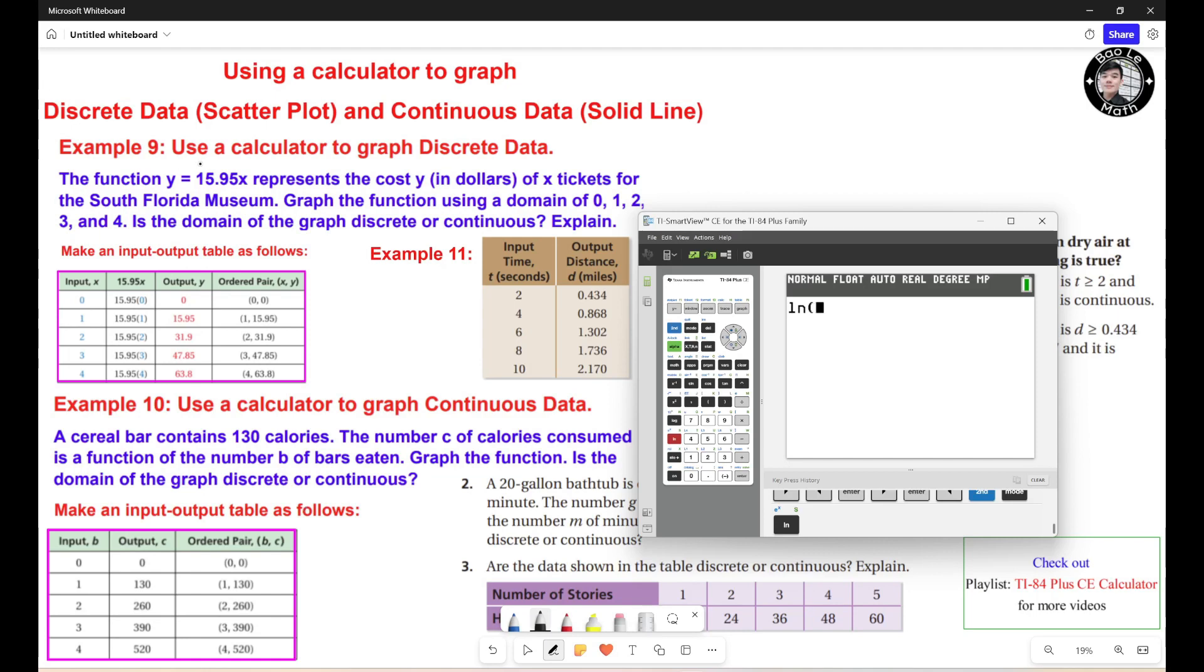Example number 9: Use a calculator to graph discrete data. The function Y equals 15.95X represents the cost Y in dollars of X tickets for the South Florida Museum. Graph the function using a domain of 0, 1, 2, 3, and 4. Is the domain of the graph discrete or continuous? Explain.